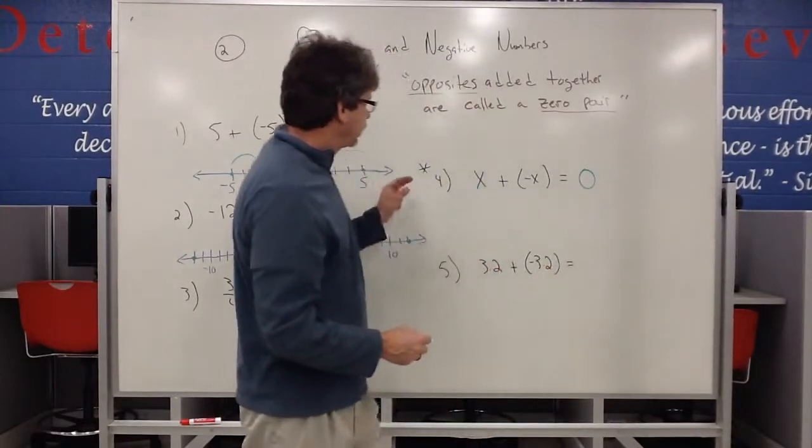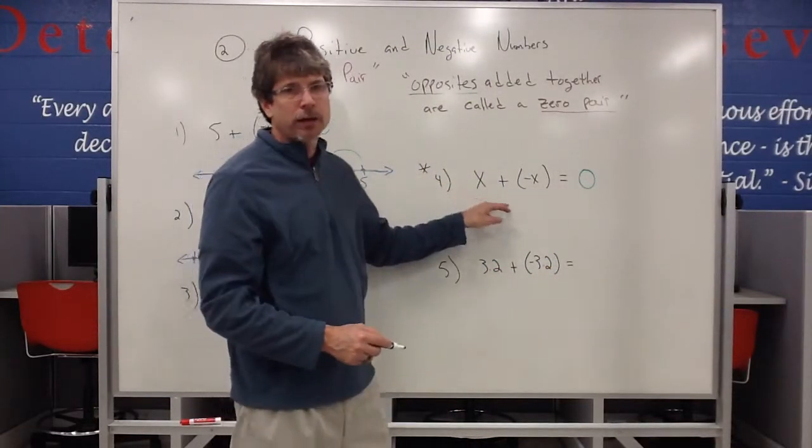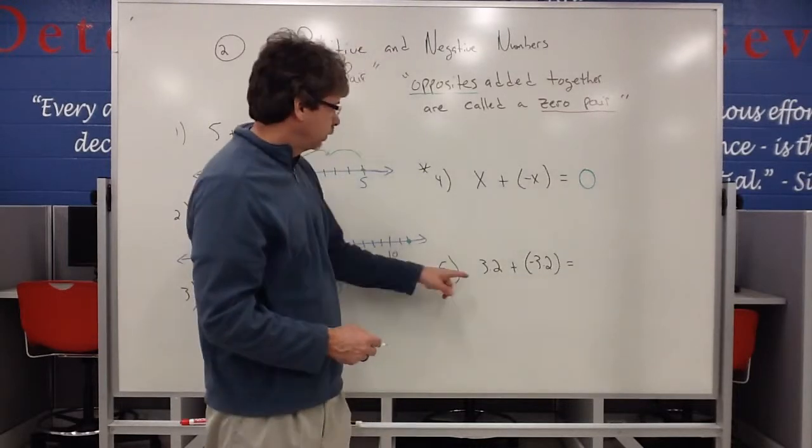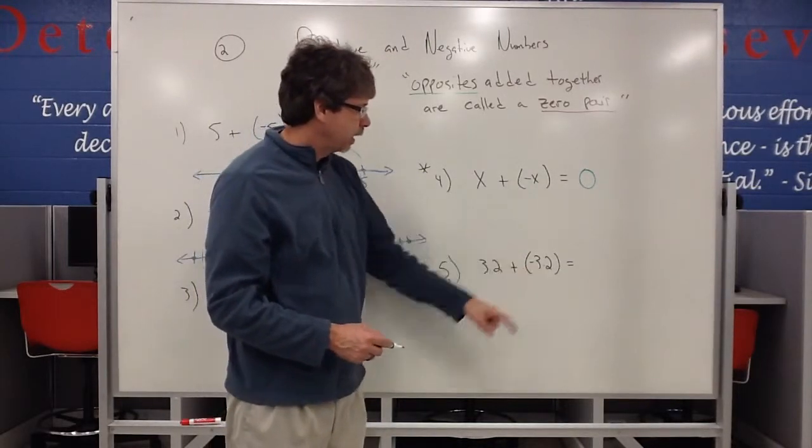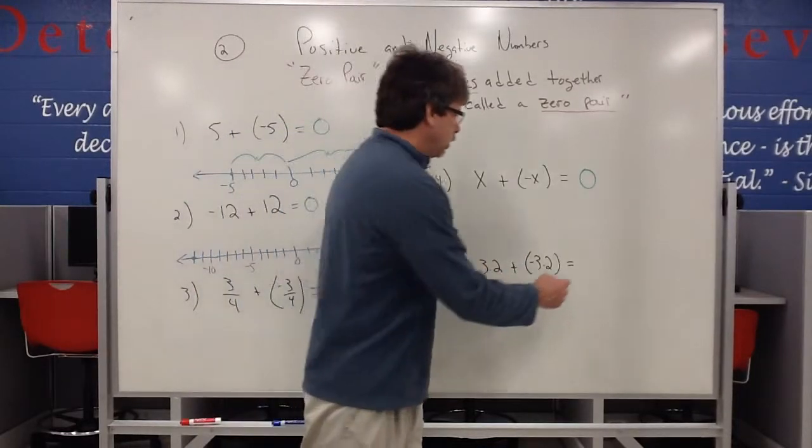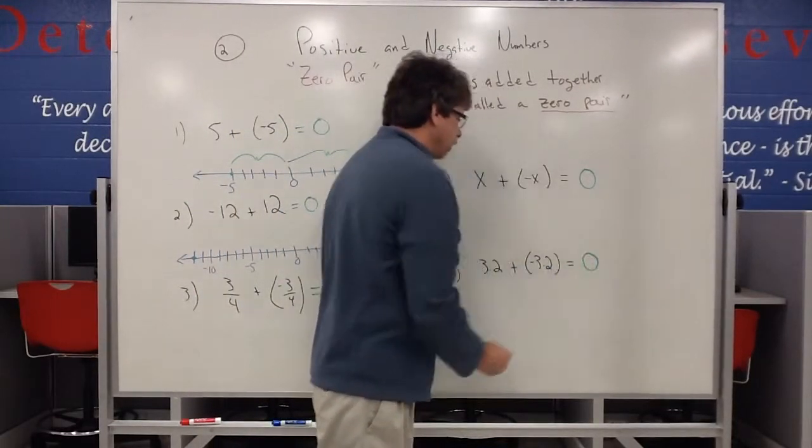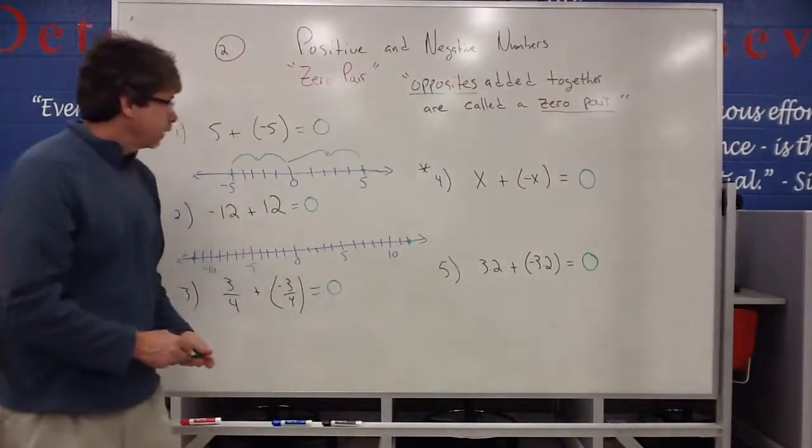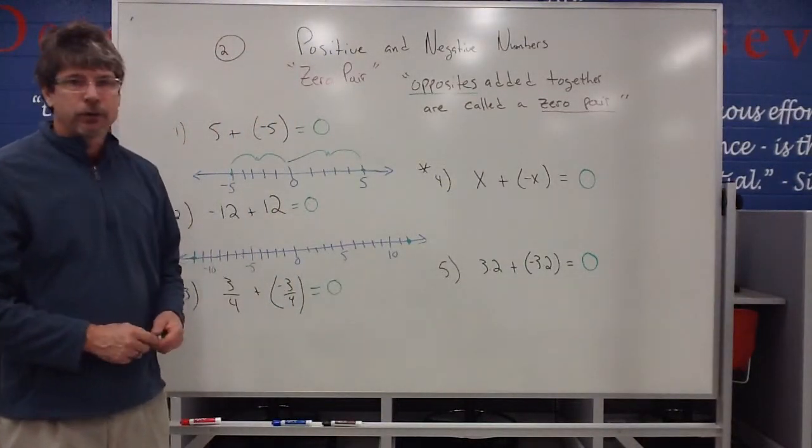This type of concept can actually be applied to variable math. So if I have 3.2 plus a negative 3.2, again, those are opposites. And since they're added together, they end up equaling zero. So that's a quick lesson for you on the zero pair.